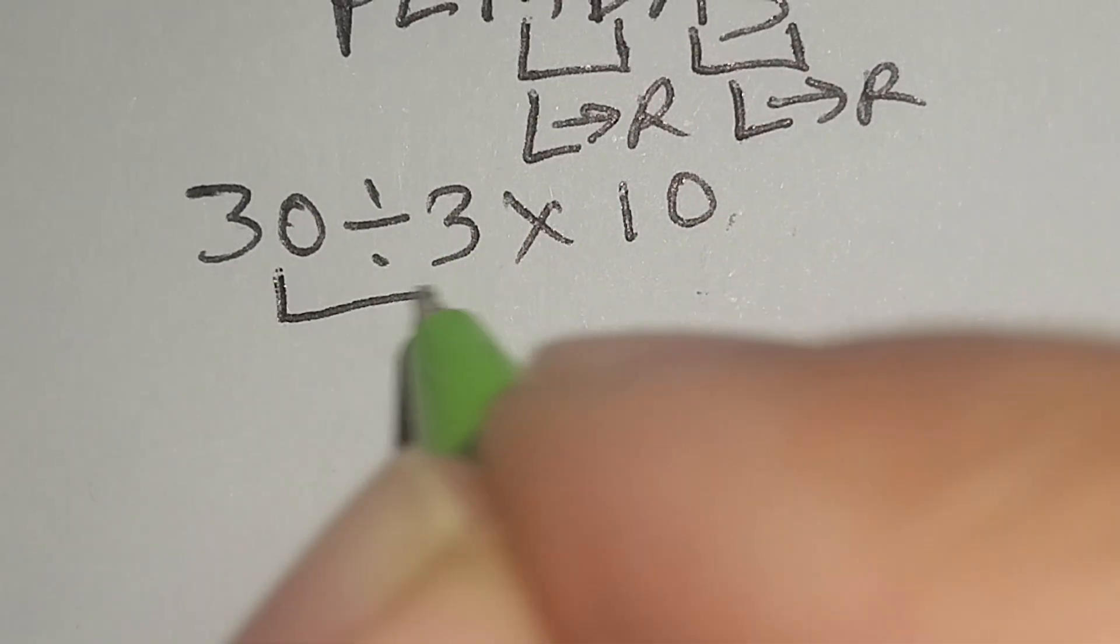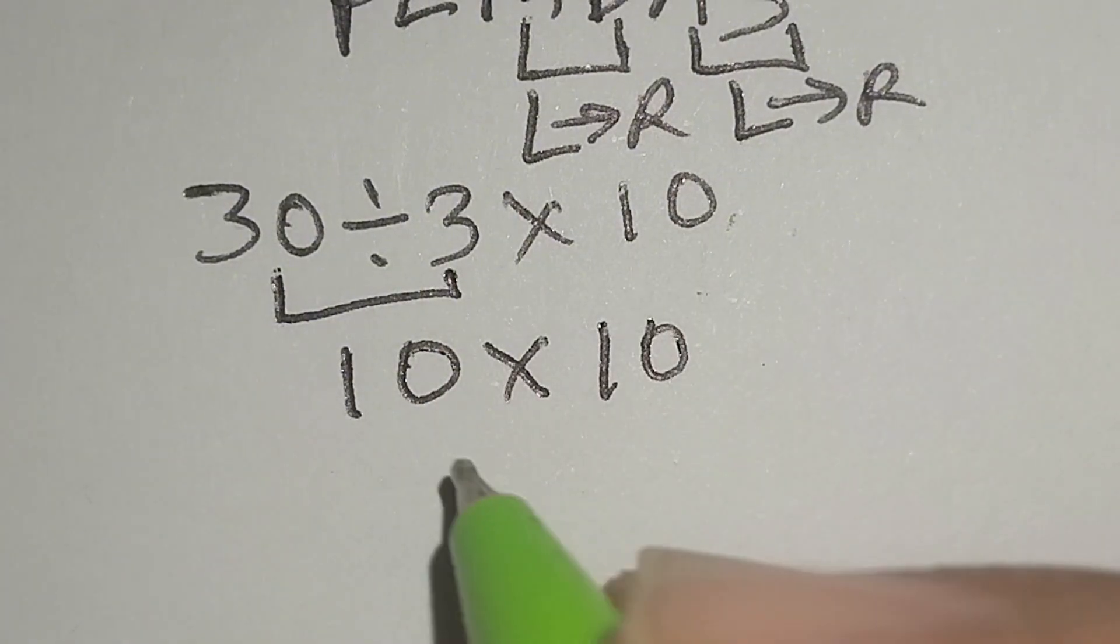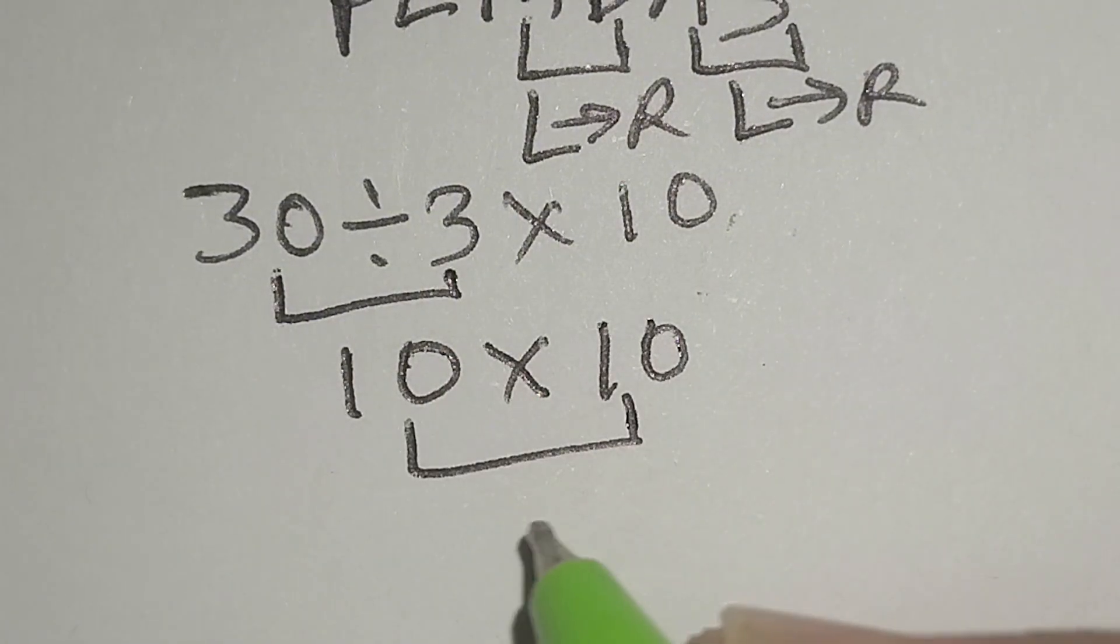Here, 30 divided by 3 gives us 10, multiply by 10. 10 times 10 gives us 100.